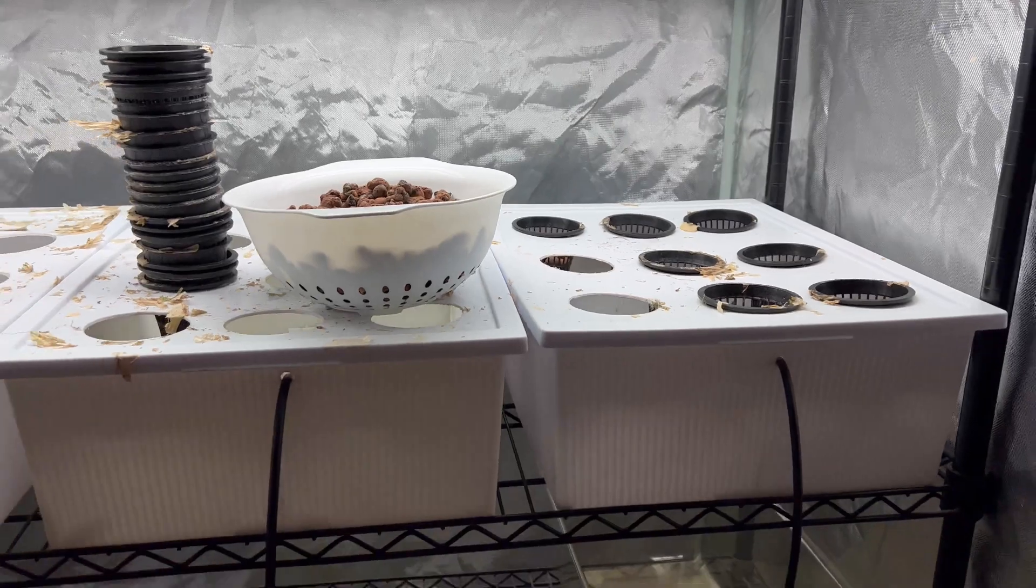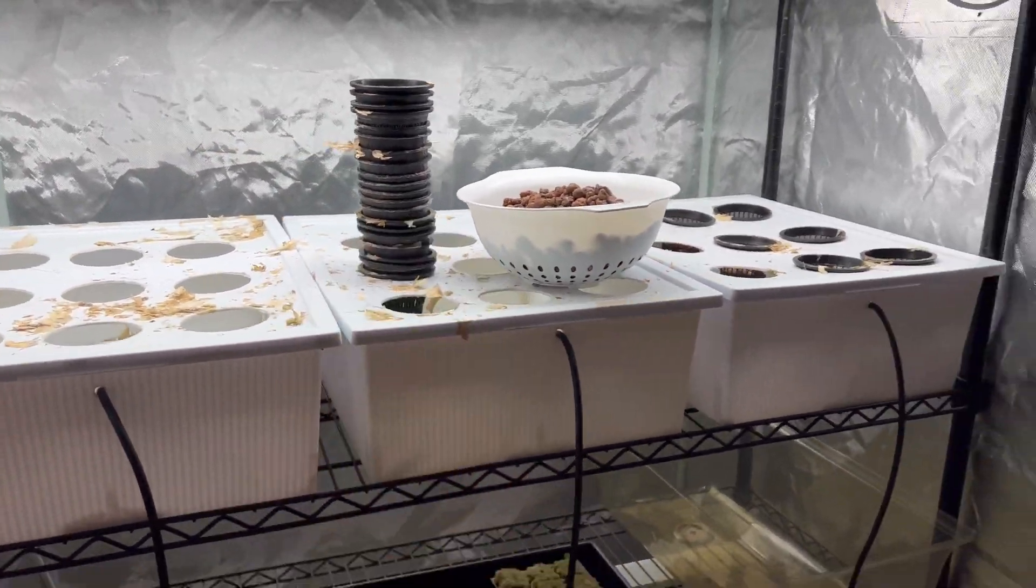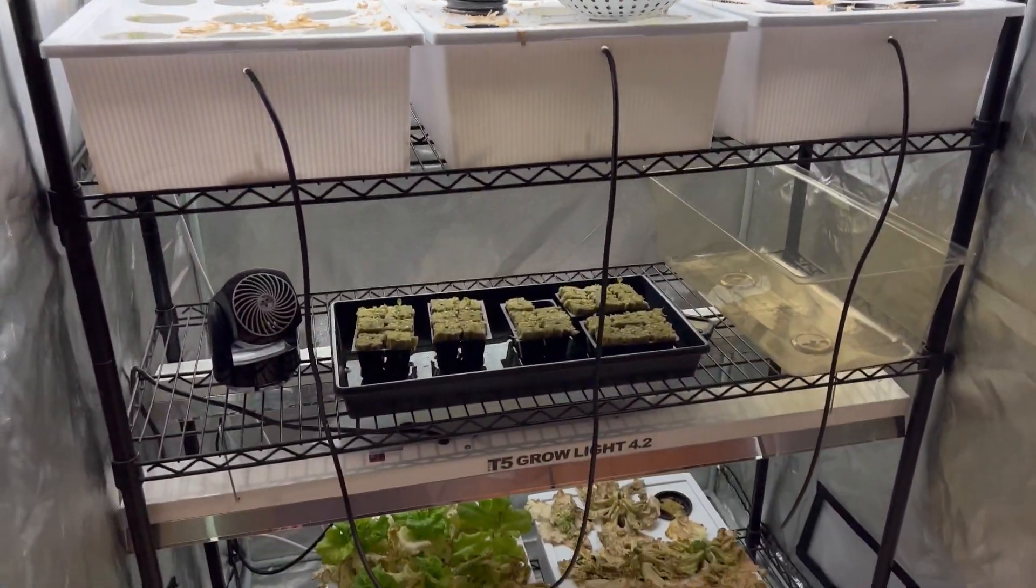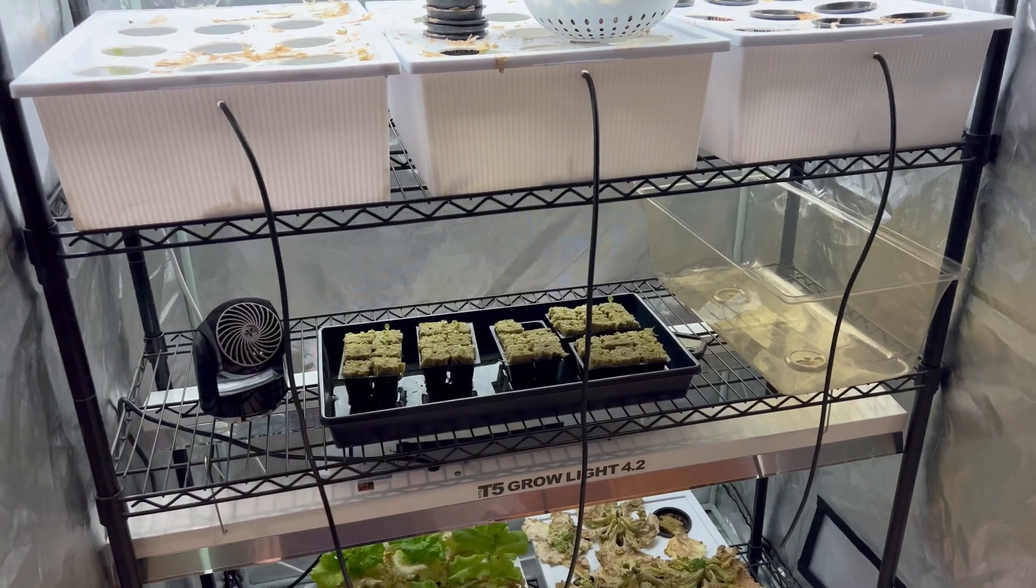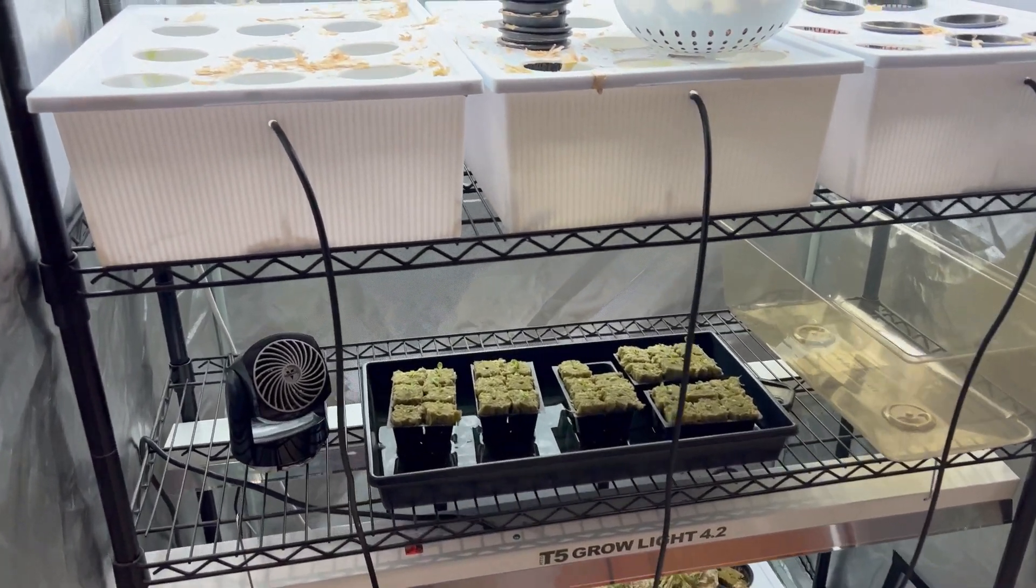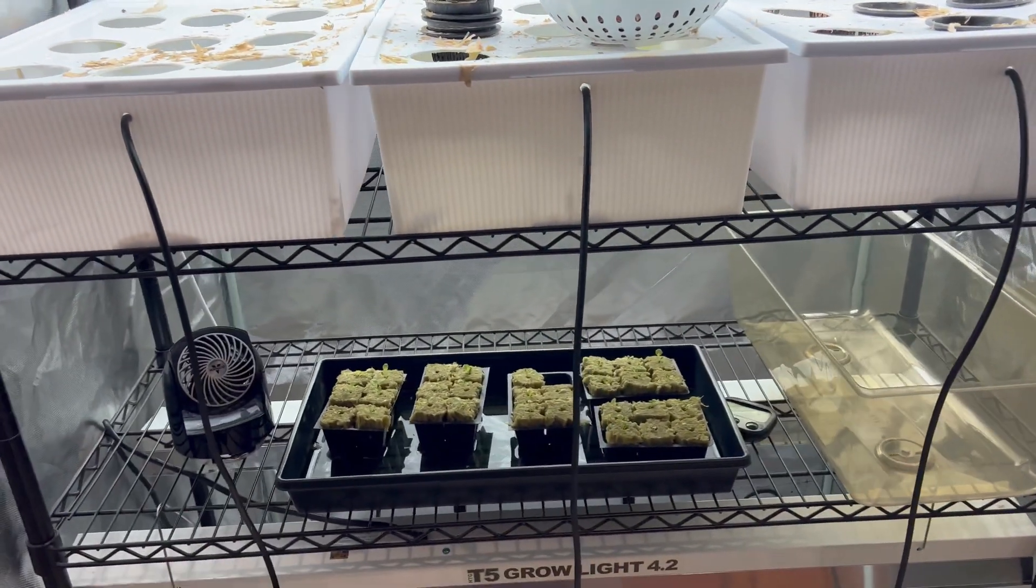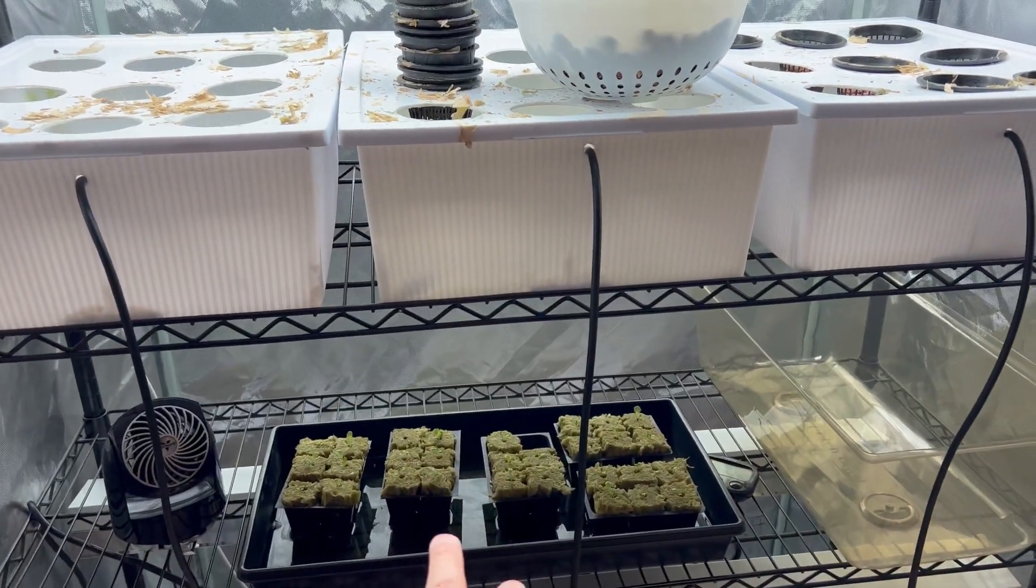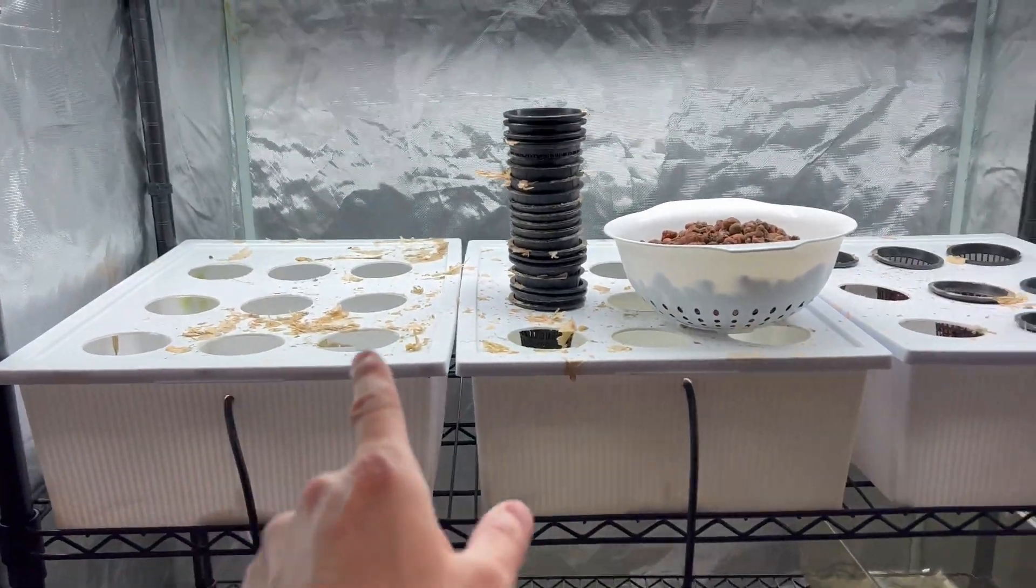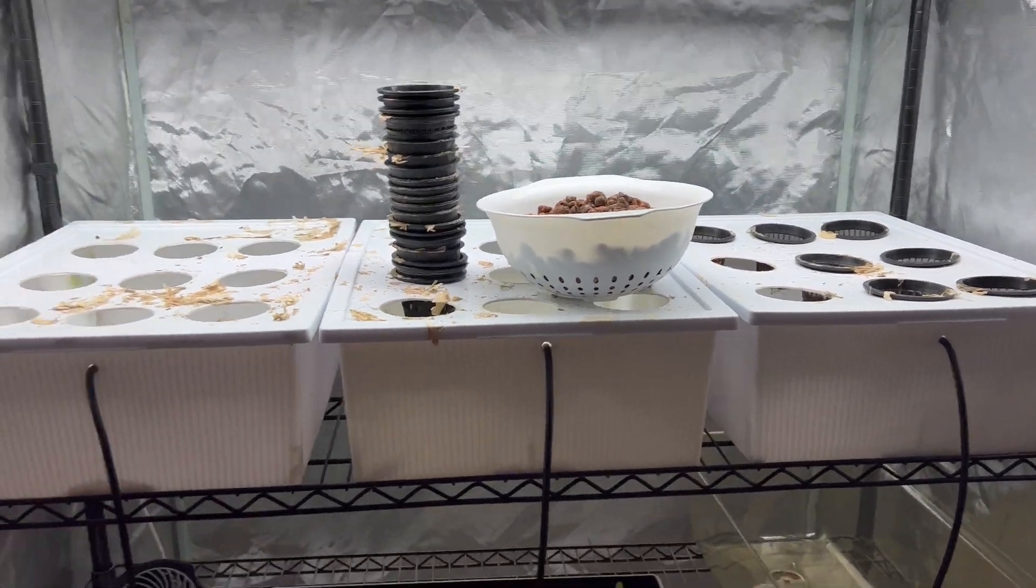This is what you see after the grow has finished on this top tier right here with three reservoirs across. I got my new seedlings right here, there's about I think 29 of them, maybe 28. I always overgrow one or two because usually one or two die out, and I have nine in each one, nine by three is 27.